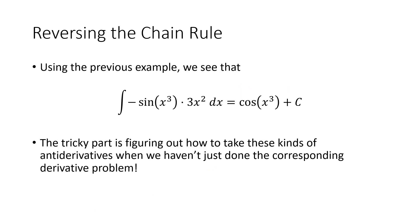If we want to think of the chain rule as helping us figure out antiderivatives, we have to think about how to reverse that process. We would need to recognize that the antiderivative of minus sine of x cubed times 3x squared can be packaged back together to recover cosine of x cubed plus c. The tricky part is working backwards to figure out how the chain rule was used, even when we haven't just done that derivative problem. In general, we'll just be given the antiderivative problem and won't know what the original function was.